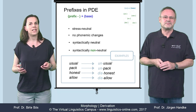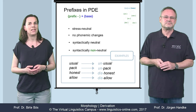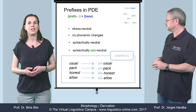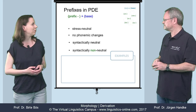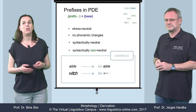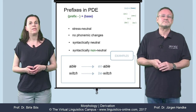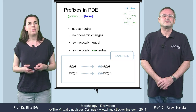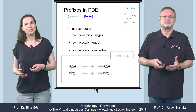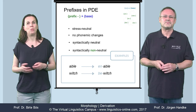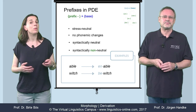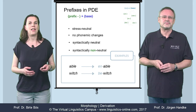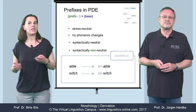However, there are exceptions. Some prefixes are syntactically not empty, and they can change the word class. Here are two examples: enable and bewitch. By means of prefixation, the adjective able may be turned into the verb enable, or the noun witch may become the verb bewitch. So the two prefixes en- and be- are syntactically not empty.